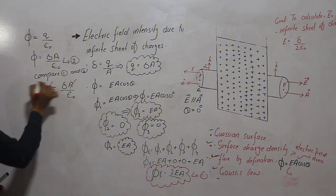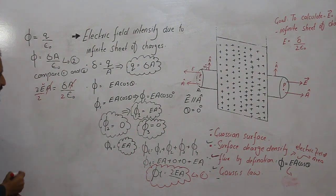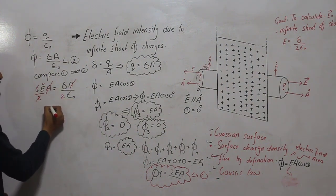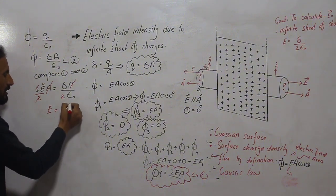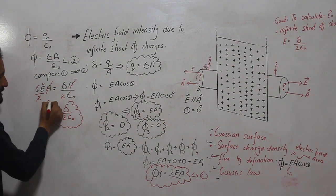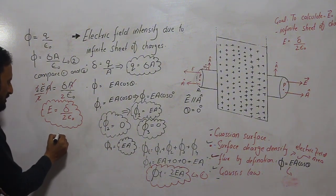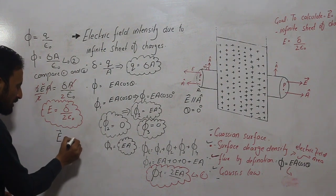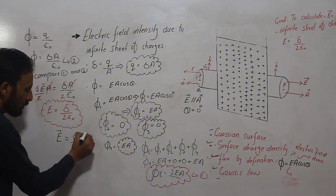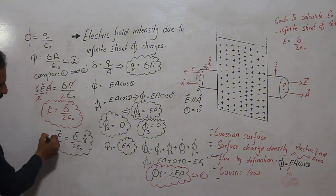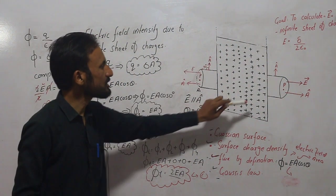Dividing both sides by 2, we get E equals sigma divided by two epsilon naught. You should remember this equation. In vector form, the electric field intensity is E equals sigma divided by two epsilon naught times the unit normal vector n-hat. This gives us the electric field intensity due to an infinite sheet of charge.